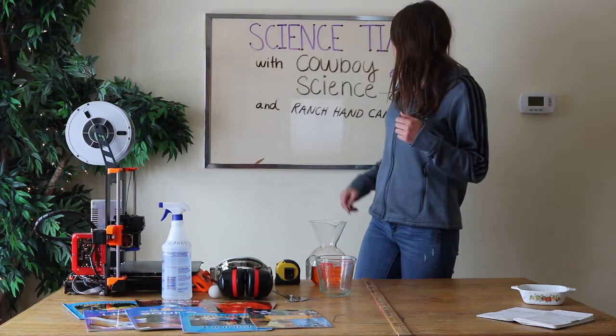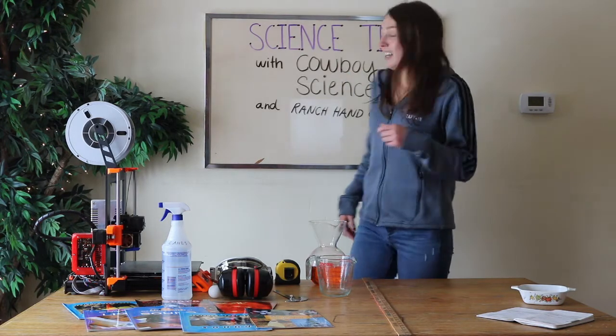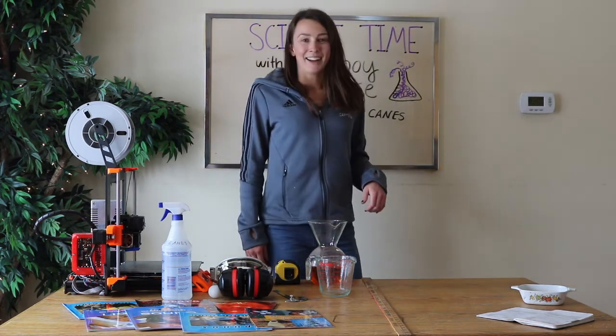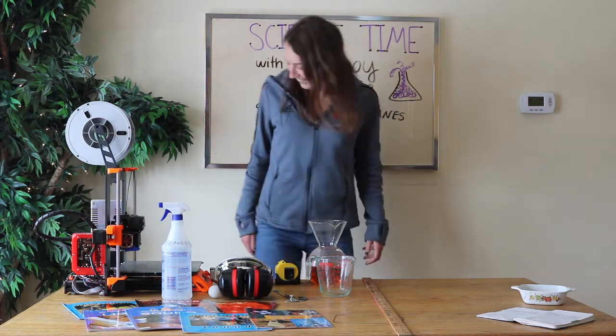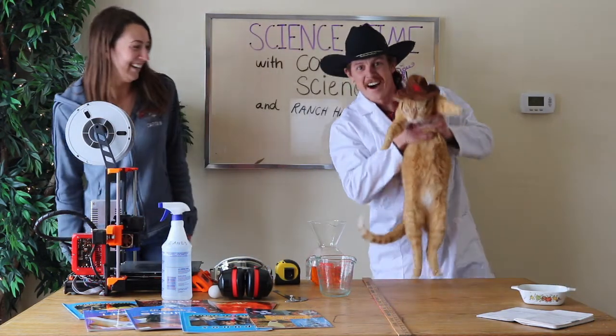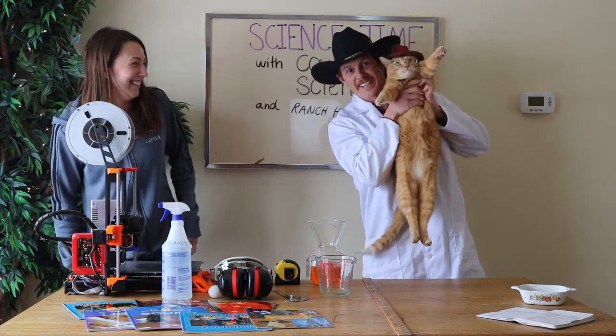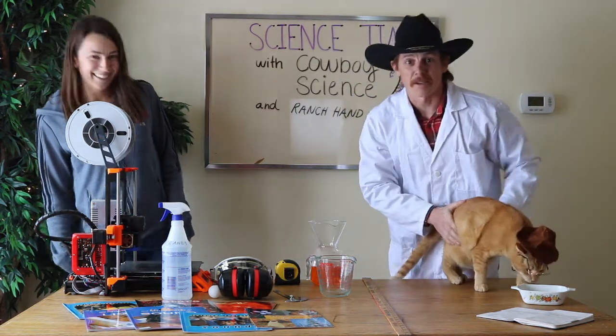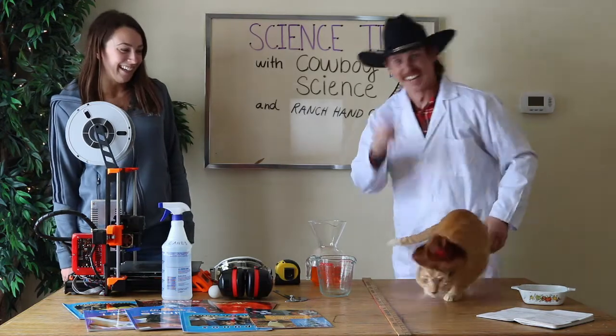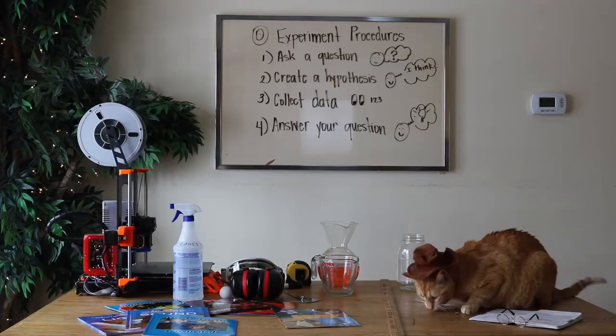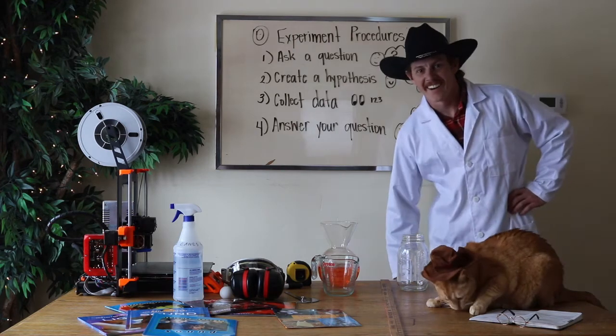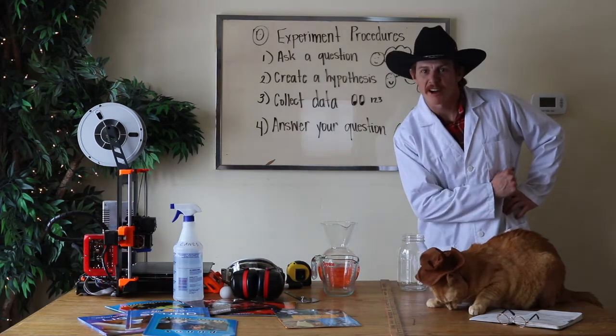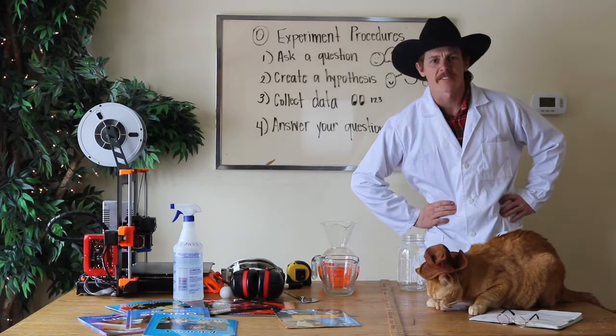And his partner in crime, Cowboy Canes. Howdy y'all, I'm Cowboy Science and this is ranch hand Canes. Today we're going to be doing some experiments. All right y'all, so we're ready for our experiment. Now the first thing we're going to have to do is learn how to perform an experiment.